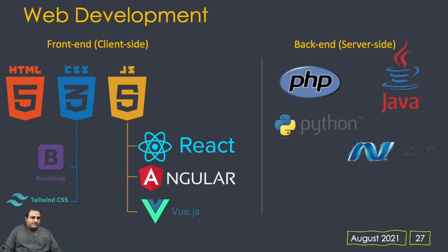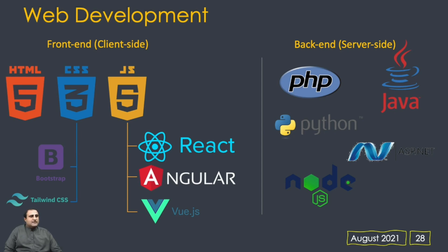On the back-end side, we have a multitude of technologies including PHP, Java, Python, ASP.NET, Ruby on Rails, and many more. Recently we have Node.js, which provides the JavaScript engine and enables writing back-end applications in JavaScript. Before Node.js, JavaScript was just confined to the client side, but after the arrival of Node.js, JavaScript has penetrated into everything — we can write back-end applications, front-end applications, mobile applications, and desktop applications all with JavaScript.